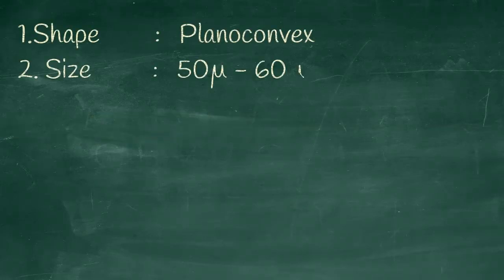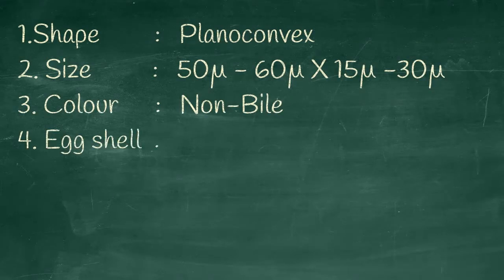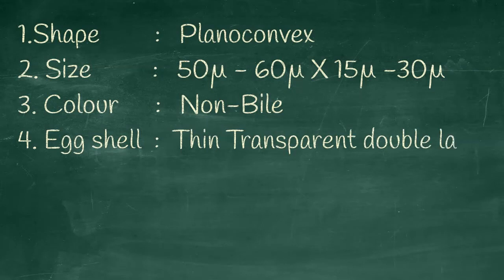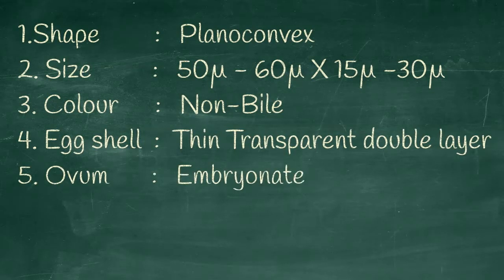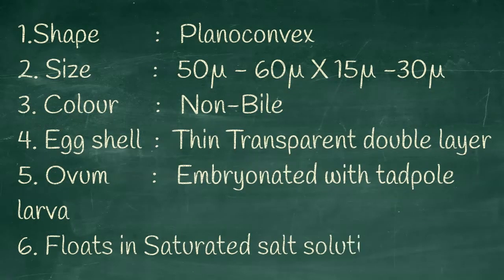Let us study about the ova. Shape: plano-convex. Size: 50 to 60 micron by 15 to 30 micron. Color: non-bile. Eggshell: thin transparent double layer. Ovum: embryonated with tadpole larva. It floats in saturated salt solution.